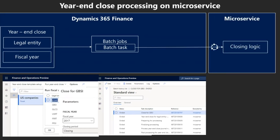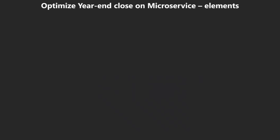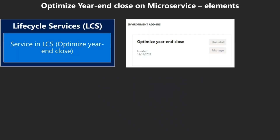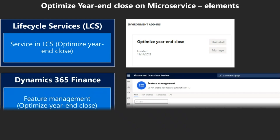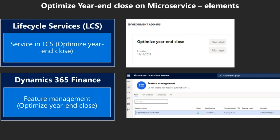With the optimized year-end close, the year-end close execution process runs on the microservice. The elements of the optimized year-end close are: the optimized year-end close service on LCS project that needs to be installed, and the optimized year-end close feature management on D365 Finance that needs to be enabled.